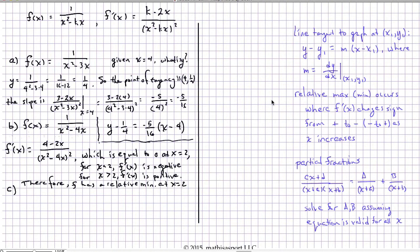Part C is really a variation on what was asked in part B because critical points are relative min's or max's. So this just asks, for what value of k do I get f prime of x changing sign at x equals negative 5? So we'll just write f prime of x equals k minus 2x over x squared minus kx, the quantity squared.